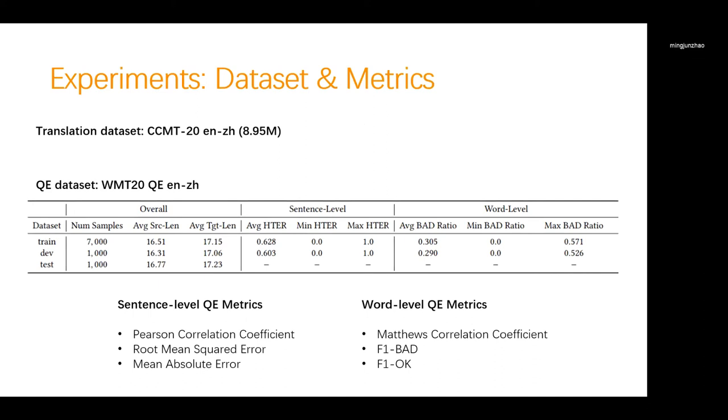Our proposed framework is evaluated on the WMT20 English-Chinese QE task. For the training of the NMT predictor, we use the CCMT20 English-Chinese dataset with 8.95 million sentence pairs. For the QE test dataset, WMT20 QE Chinese-English dataset is used. The detailed statistics of the dataset is shown in this table. For the evaluation metrics, we use Pearson correlation coefficients MAE and RMSE for the sentence-level QE, and Matthews correlation coefficients F1BAD and F1OK for the word-level QE task.